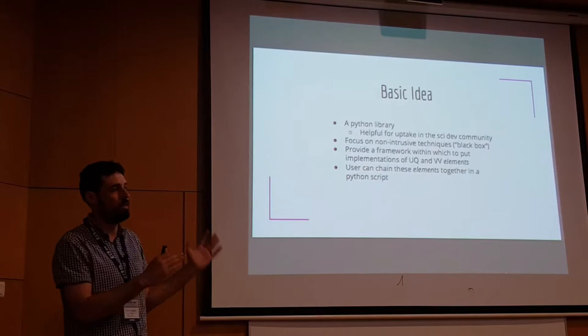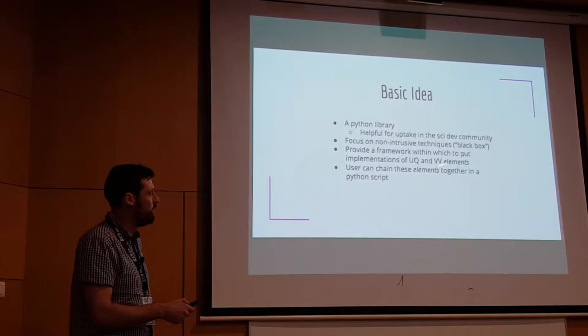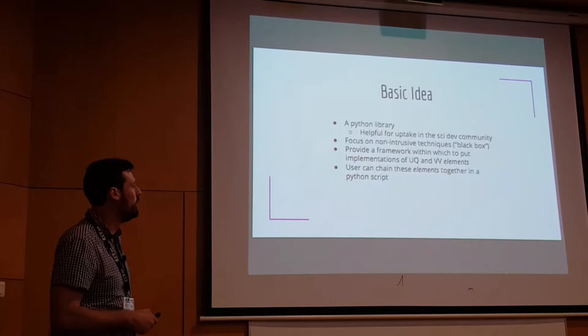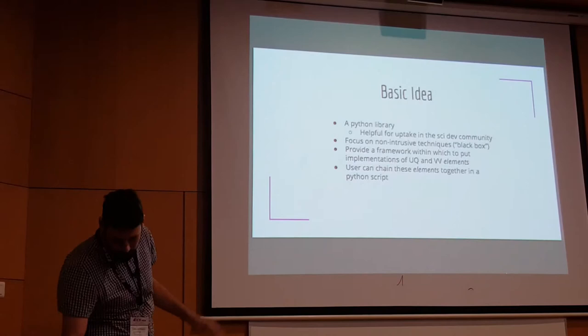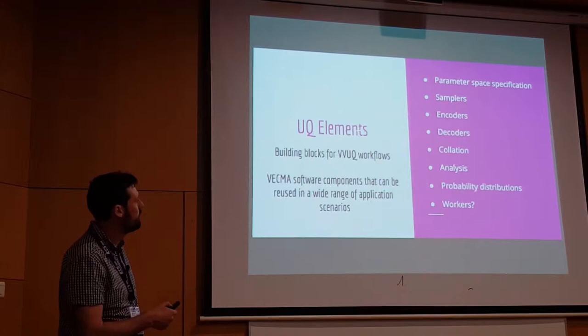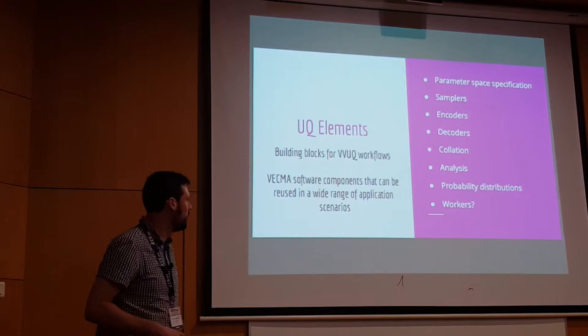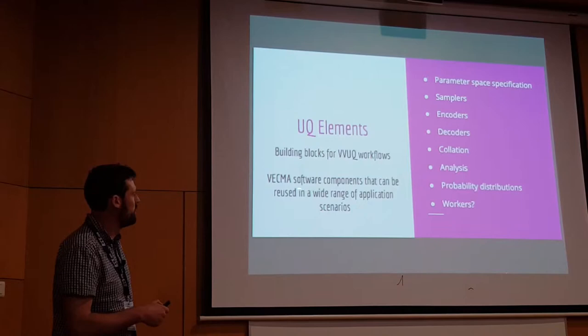The basic concept is we provide a framework within which we put implementations of uncertainty quantification, validation, and verification elements. These elements are reusable generic implementations of some kind of primitive piece of a UQ algorithm or a validation algorithm. The user should be able to chain these elements together in a Python script. Here are examples of UQ elements we've identified: parameter space specification, samplers, encoders, decoders, collation analysis, probability distributions, and possibly workers. They are just software components that can be reused in a wide range of application scenarios without depending on the application itself.